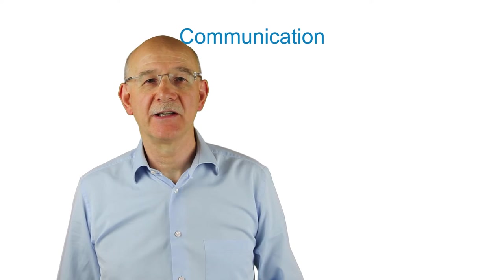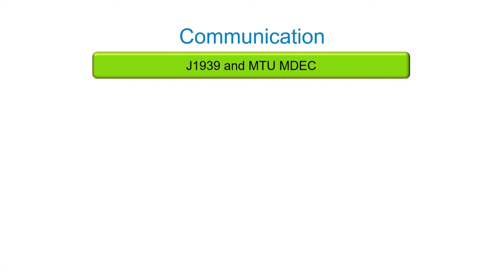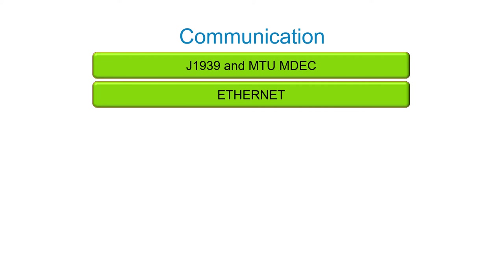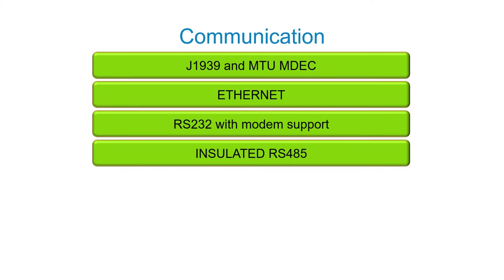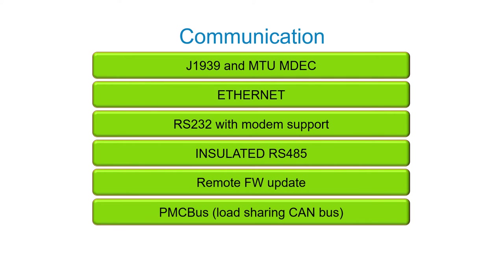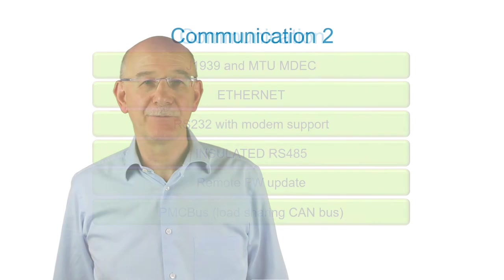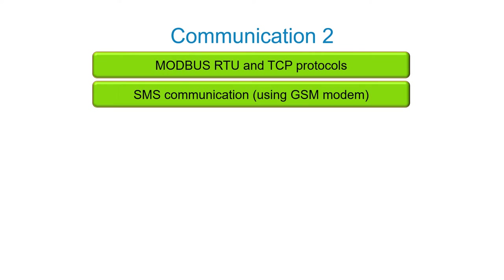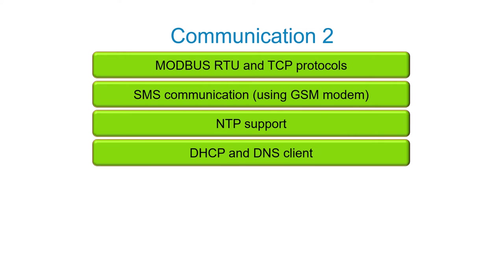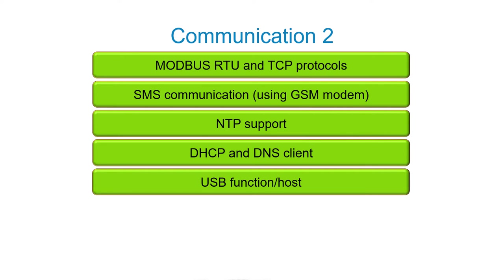The GC600 has a rich set of communication interfaces: an insulated engine CAN interface with J1939, insulated Ethernet, RS-232 with modem support, insulated RS-485, remote firmware update, insulated CCS PMC bus for load sharing and power management, S-Protocol, Modbus RTU and TCP protocols, MTP protocols, short message communication using GSM modem, DHCP and DNS client protocols, and USB function host.